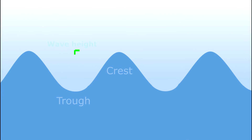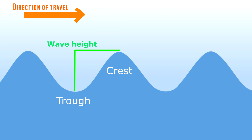Wave height and direction are fairly basic. The height is how tall the wave is from the trough to the crest, and the direction indicates where the waves are coming from, not the direction they are headed towards.